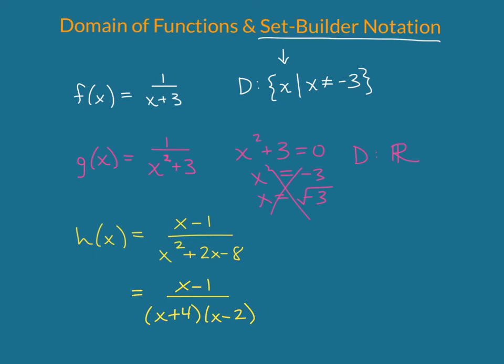So writing that domain in set-builder will look like the brackets, all x's such that x does not equal, and we'll do the smaller number first, negative 4, and x does not equal 2.